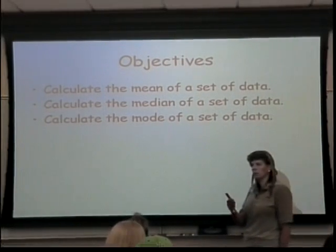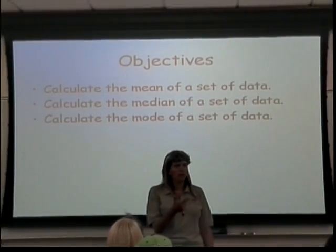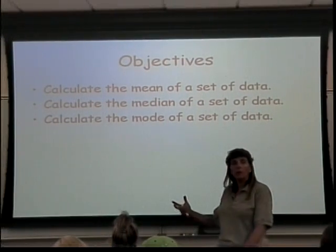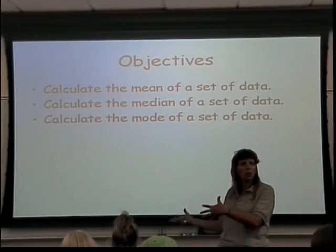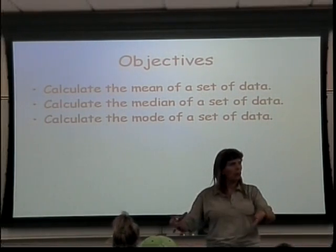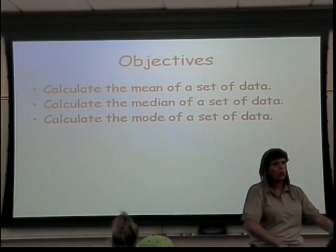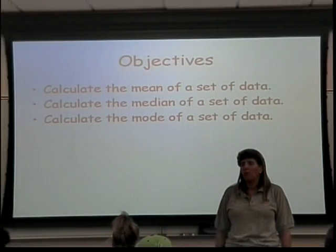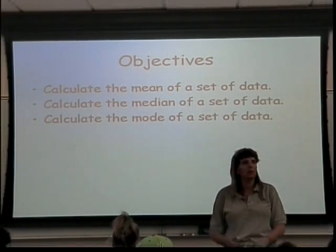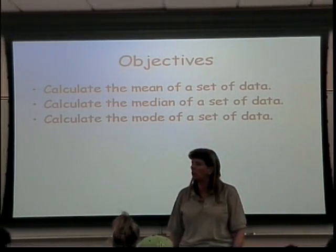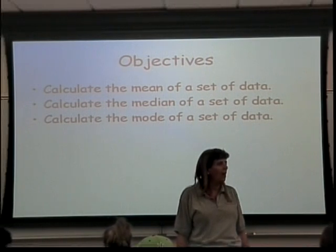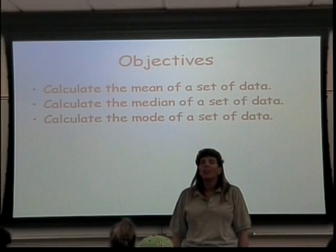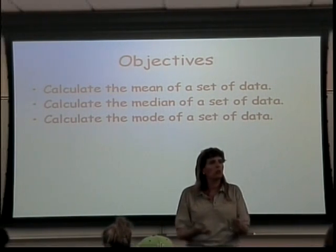We're going to calculate means, medians, and modes. In section 4.1, we took our data and organized it into lovely tables and histograms, but lots of people don't really care about that. If you wanted to know about the price of houses and somebody gave you a histogram, would you really want to read it? Probably not. Instead you'd say, can you give me a number? The kind of number you're going to get is a measure of central tendency.